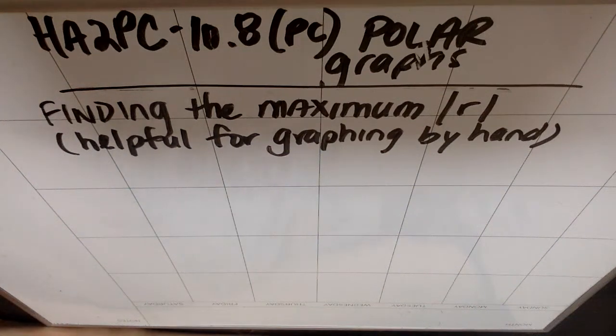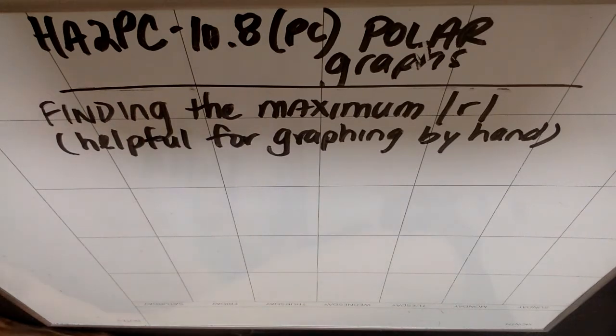On our Algebra 2 Precalculus, we're doing 10.8 in precalc, which is polar graphs. This is the last video of the section, and I actually meant to do this right after I did the zeros, but I forgot. So it's the last video of the section, and we'll do example 5 in it.